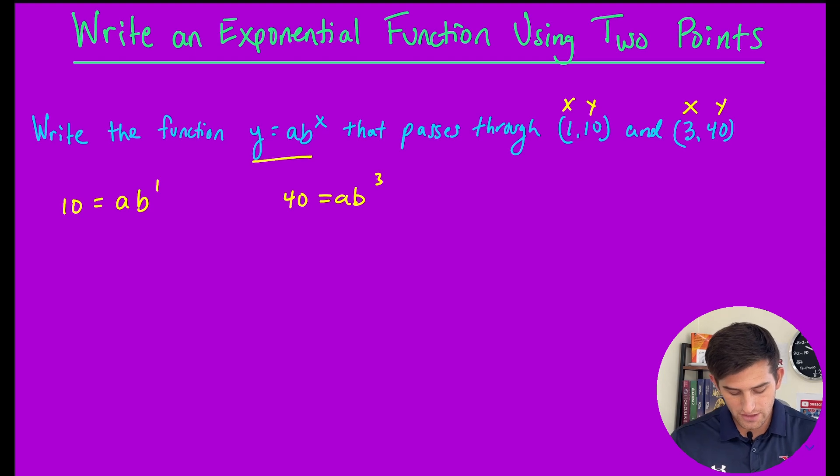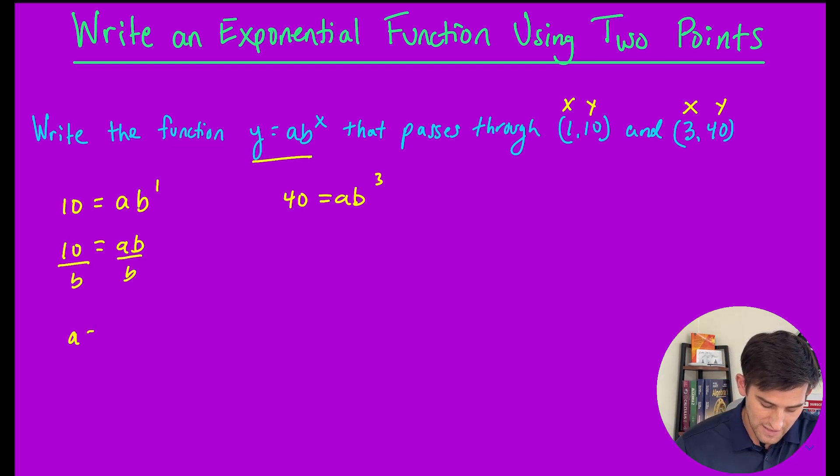Now let's solve the first equation for a. We have 10 equals a times b to the first, which is essentially just 10 equals a times b. If I divide both sides by b, we get a equals 10 over b.